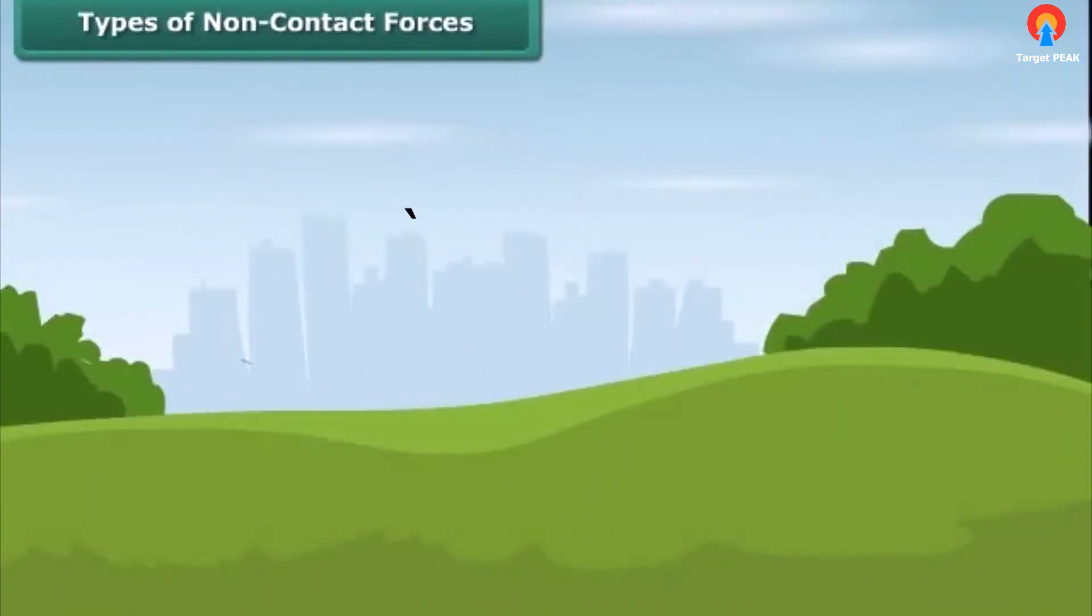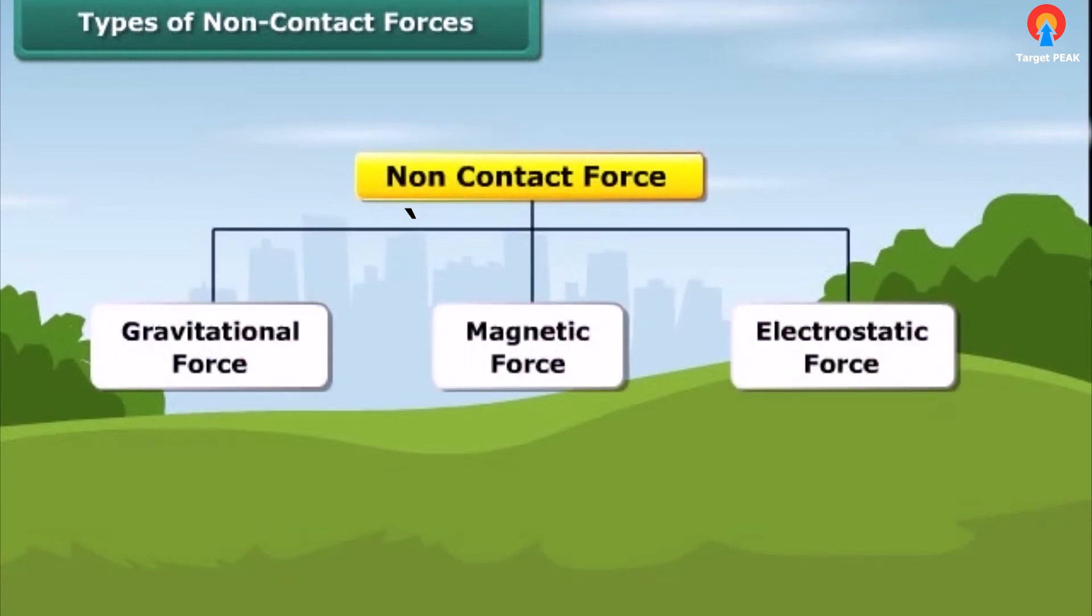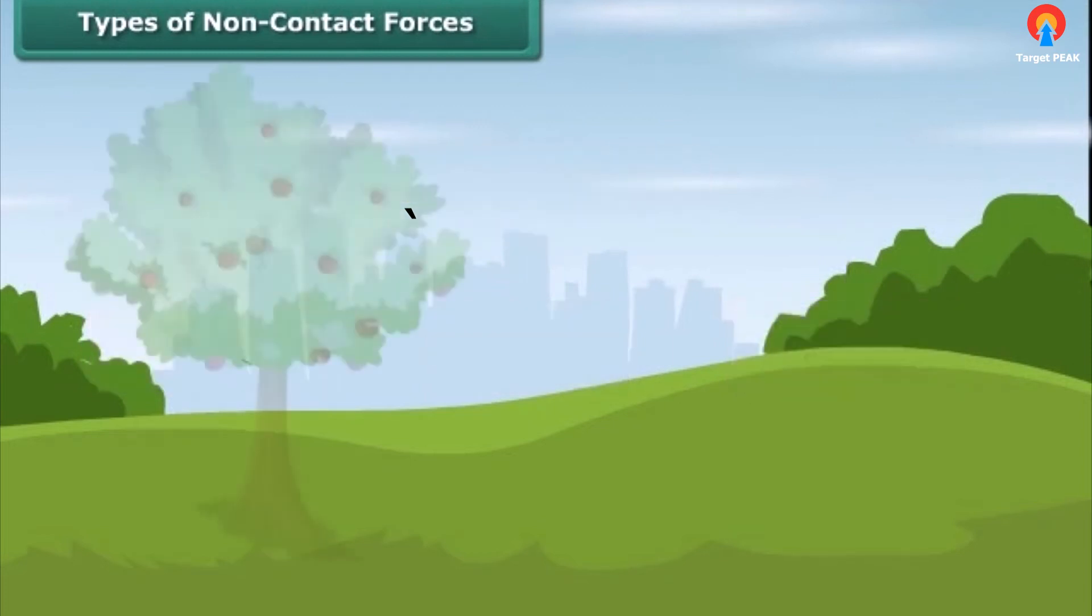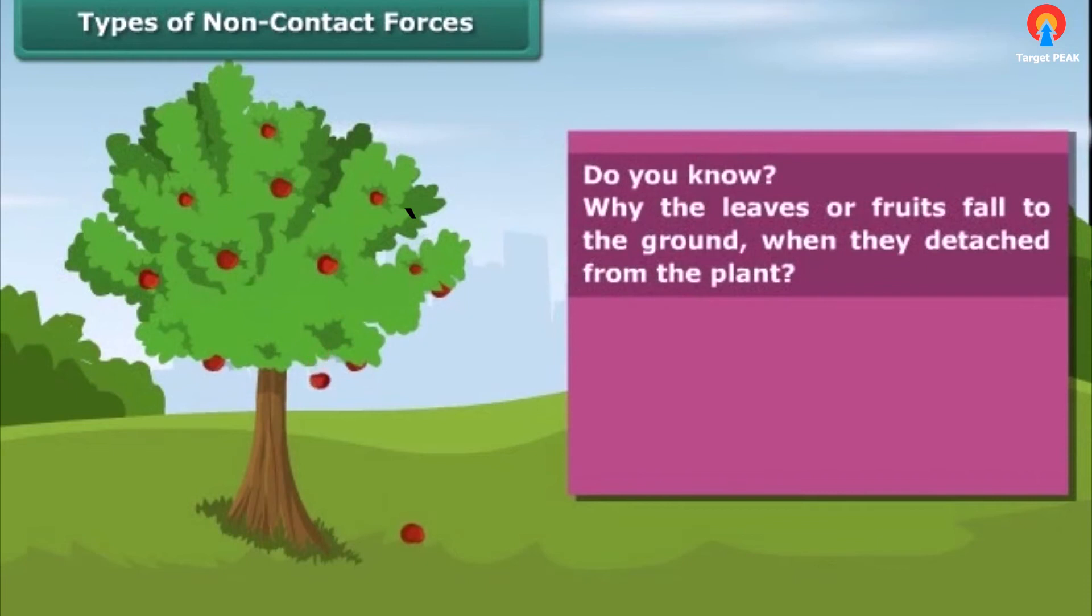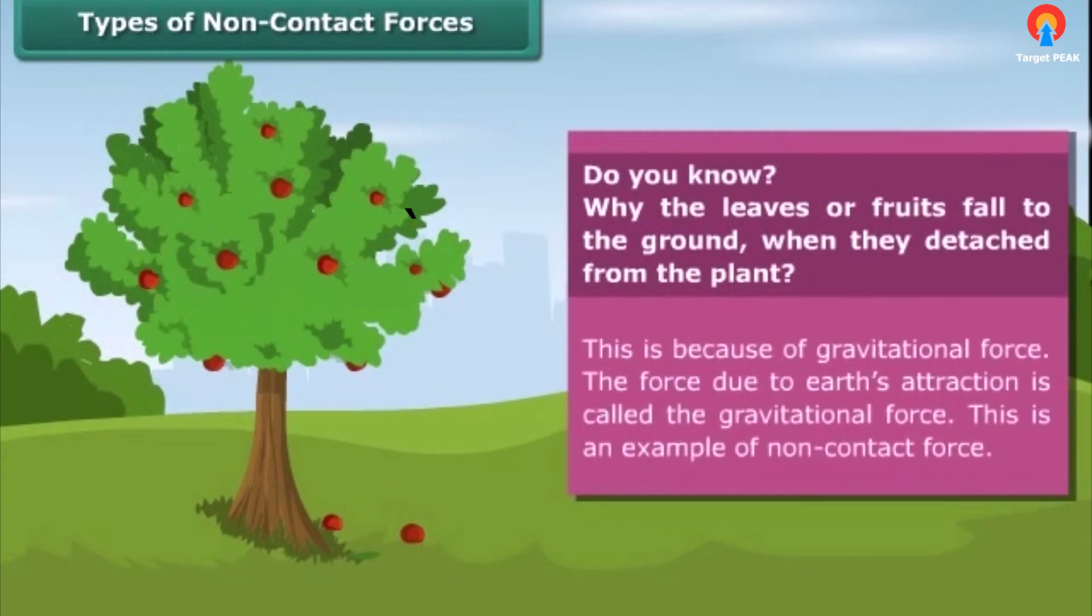Types of non-contact forces are gravitational force, magnetic force, and electrostatic force. Do you know why the leaves or fruits fall to the ground when they detach from the plant? This is because of gravitational force. The force due to earth's attraction is called the gravitational force. This is an example of non-contact force.